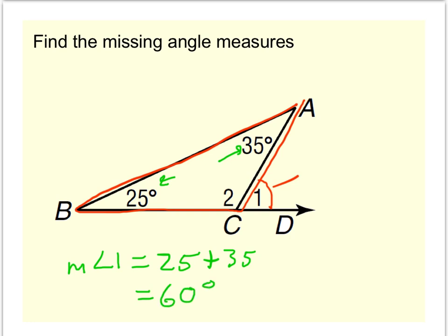Lastly we need to find angle 2. Well, there are different ways to go about finding it. One possibility is to look at triangle ABC using the triangle sum theorem. The three angles have to add up to 180. So 25 plus 35 plus angle 2 has to add up to 180. So that's one way to get the fact that the measure of angle 2 is 120.